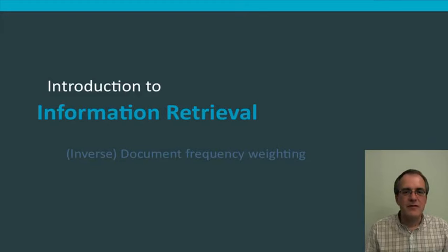In this segment, I'm going to introduce another score that's used for ranking the matches of documents to a query, and that is to make use of this notion of document frequency. In particular, we always use it in reverse, so it's normally referred to as inverse document frequency weighting.